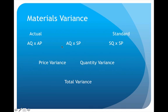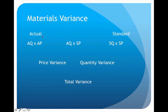Then we have a midpoint, which is a combination of both. The way to remember the midpoint is that it's the very first item and the very last item — so it's the actual quantity times the standard price. In between the first two points there will be a price variance, and in between the last two points there will be a quantity variance. Between the two endpoints will be a total variance. This is the structure we use to set this up.